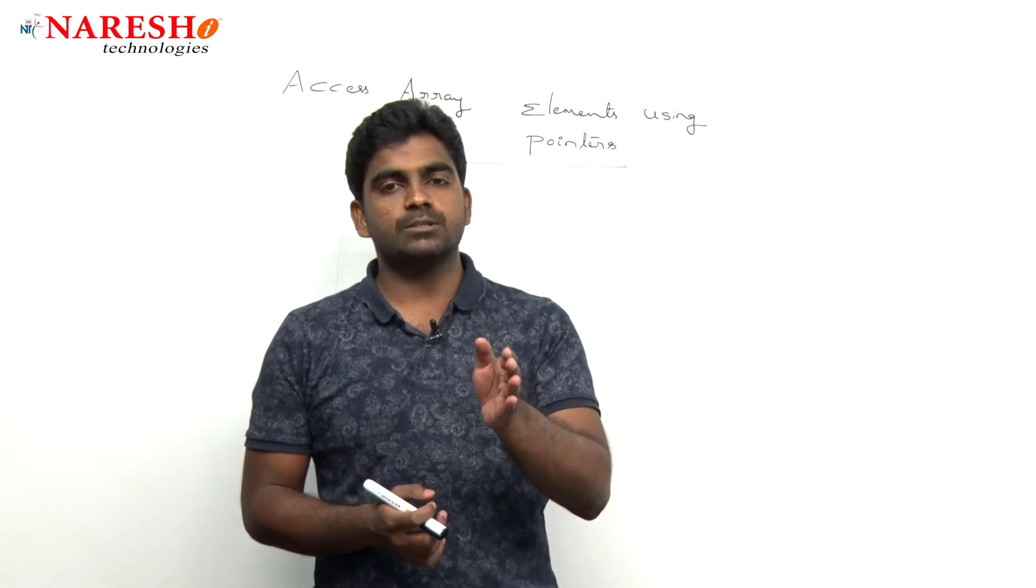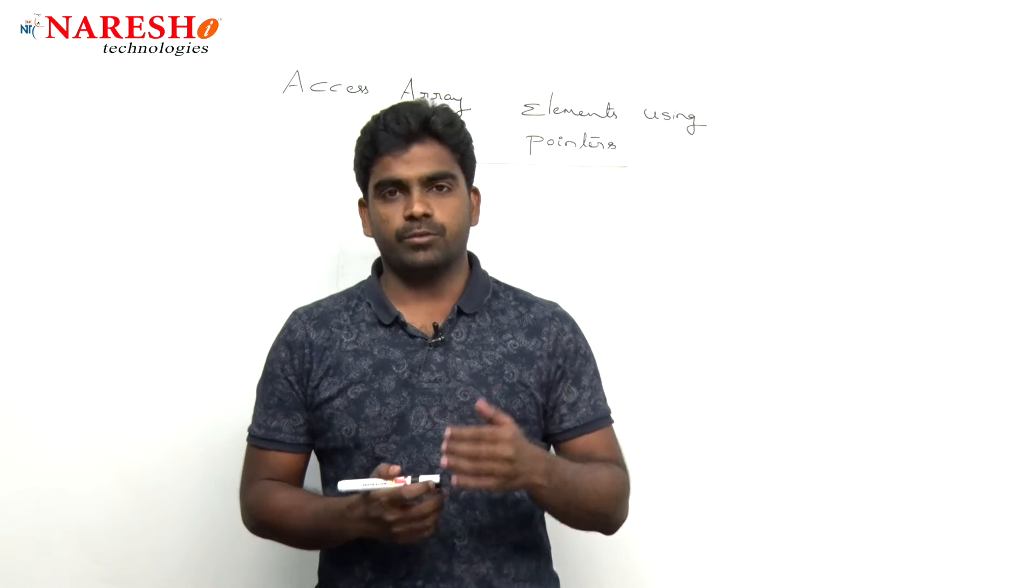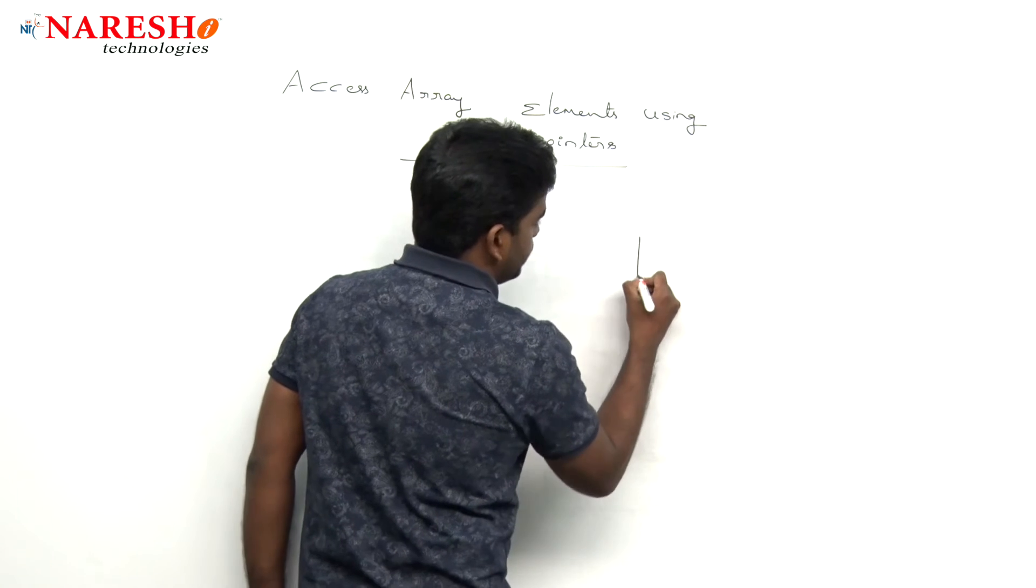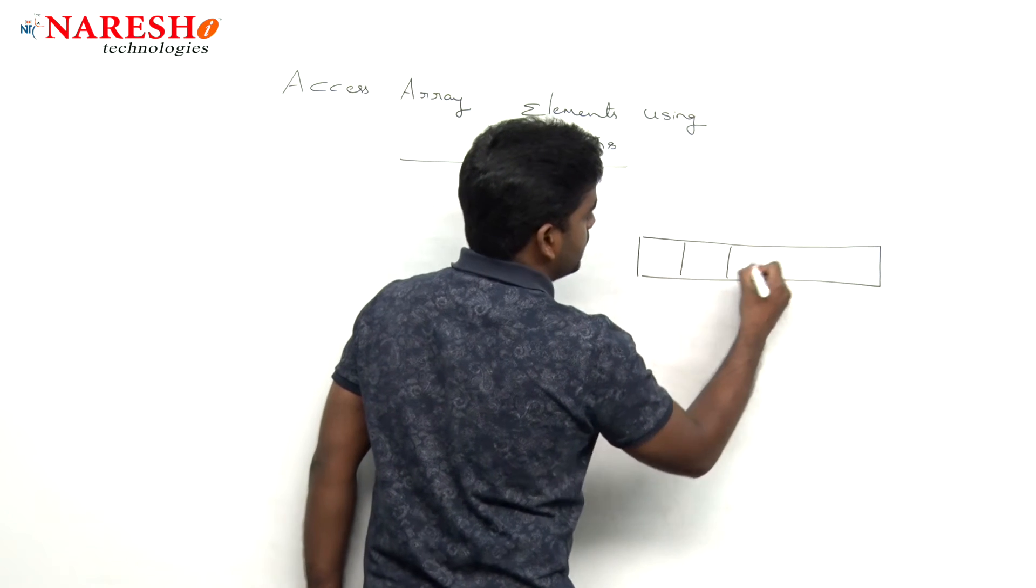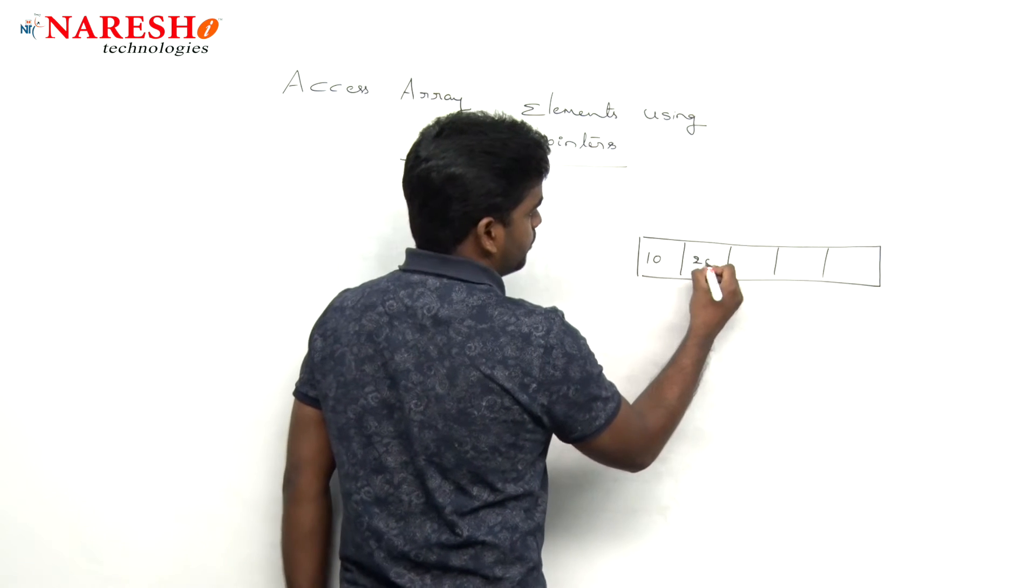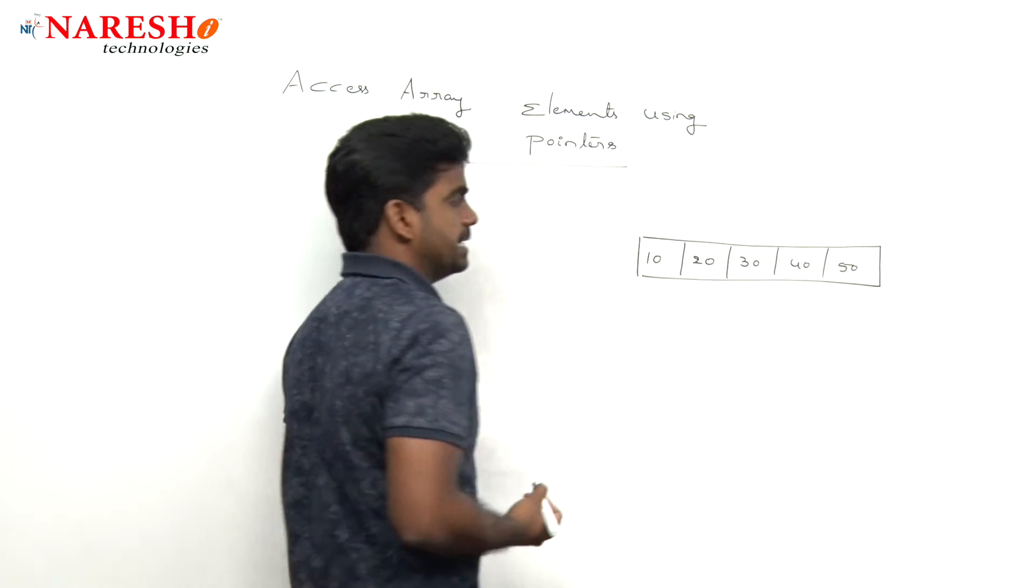When a pointer is pointing to an array, how can we process the information? Generally, if you take one array, if it is a static memory allocation, we are accessing the elements using index.